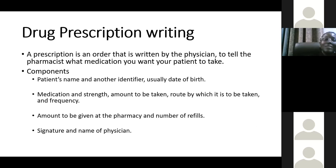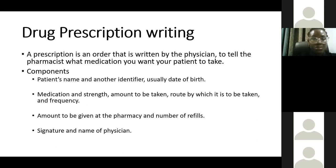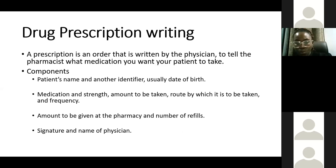The components of the prescription include the name of the patient and another identifier — usually the date of birth — for the sake of avoidance of errors, because two people can have the same name but would most probably not have the same date of birth. Once you put those two there, you decrease the risk of writing the wrong prescription for the wrong patient. The prescription should also contain the medication and the strength — for example, 400 milligrams of metronidazole.